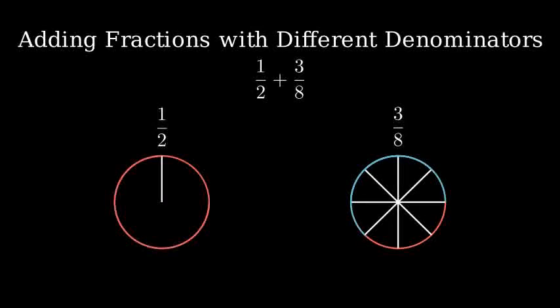Here's 1 half, imagine a pizza cut into 2 equal pieces, and we're taking 1 piece. And here's 3 eighths, a pizza cut into 8 equal pieces, and we're taking 3 pieces.